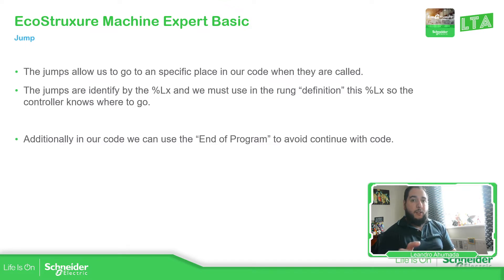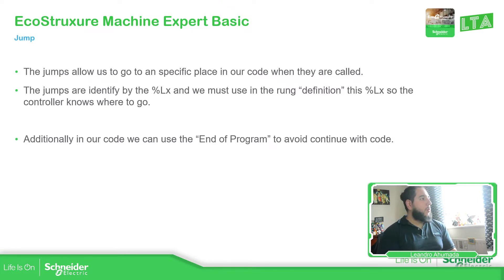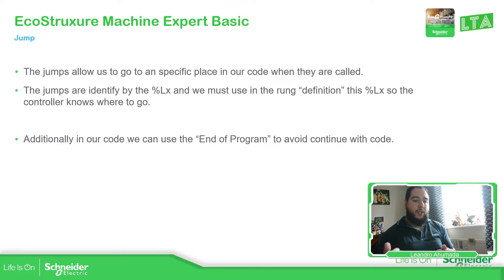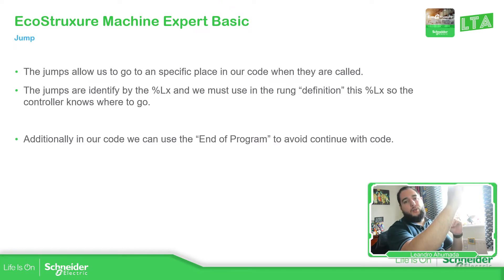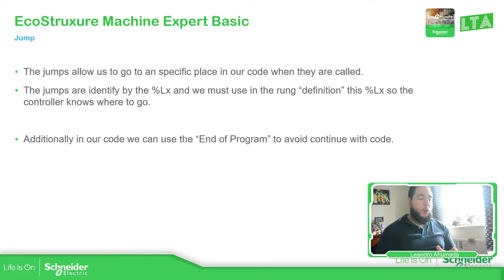There is a specific element for the jump and we need to introduce the percentage L, which I believe is for label. This percentage L must have a number. Based on this label, it allows us to indicate on the left side of the rung where we want to jump. So I have my rung with the code and then I execute the jump with a specific label, and that label allows me to go to any position that I want in the code.